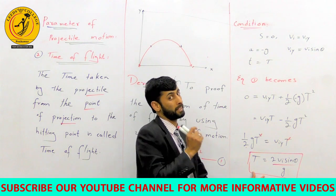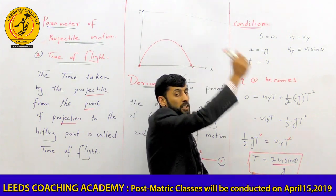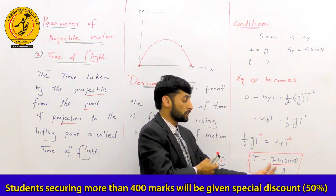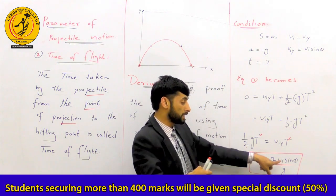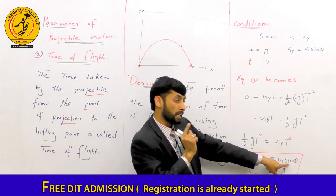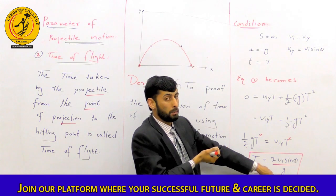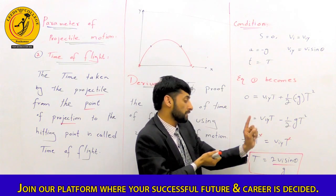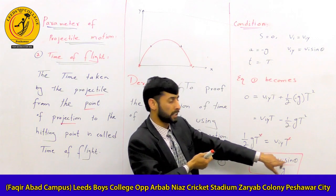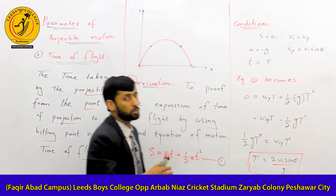For the time of flight equation, the parameters are the initial velocity and the angle theta. The value of g is a constant. So the two parameters that affect the time of flight are the initial velocity and the angle theta.